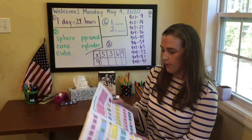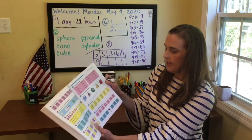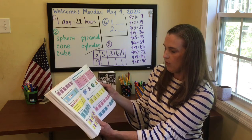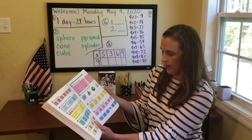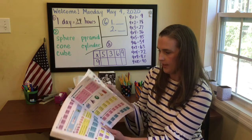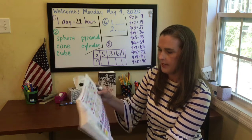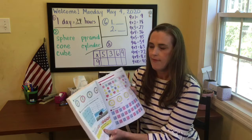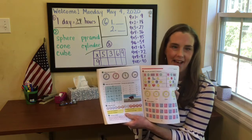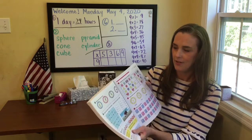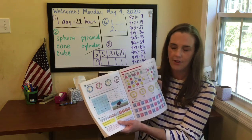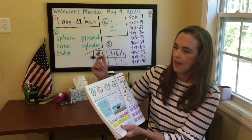Part three you're adding. Part four you're subtracting. I know you're going to do a great job with all of that. In part five you're writing the time. You're going to look at those clocks and I'm going to write the correct time.